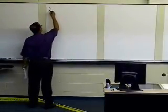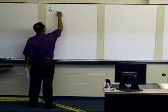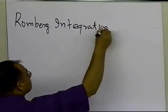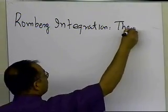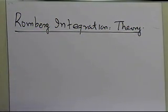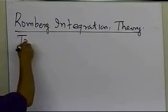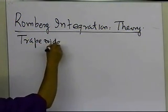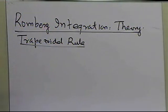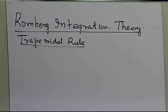In this segment, we'll talk about Romberg integration and the theory behind how it works. We'll be limiting our discussion to the trapezoidal rule as the basis for Romberg integration, because Romberg integration can be based on other rules as well, such as Simpson's one-third rule or Simpson's three-eighths rule. So we're going to limit our discussion to Romberg integration based on the trapezoidal rule.